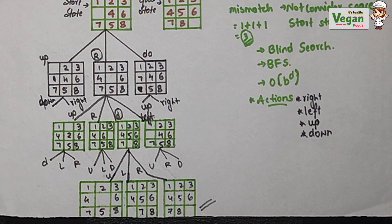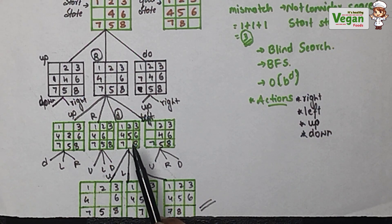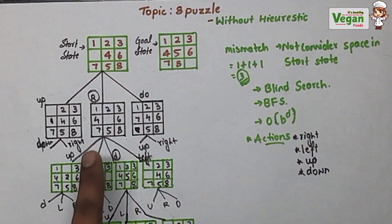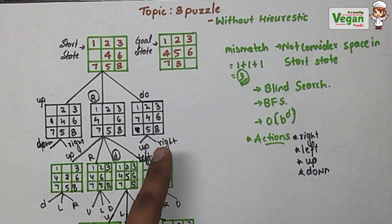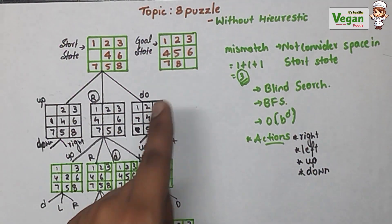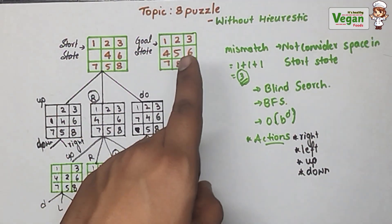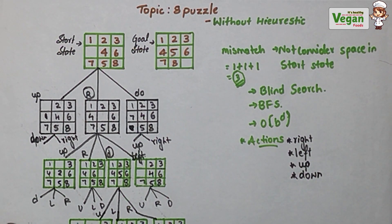What we did was take the best possible way at each step. For all other branches we simply wrote the possible actions but only expanded the state that helps us go towards the goal state — the best path. While writing the possible actions, only expand those which can help reach the goal state. Compare with the goal state, then proceed. Hope you understood the concept of the 8 puzzle problem without heuristic. The with-heuristic problem video link is given in the description. Thank you.